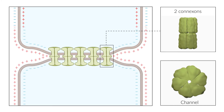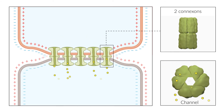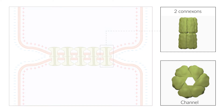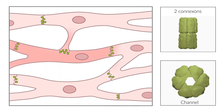If an action potential depolarizes one of the cells, a potential gradient is created between the two cells. This drives the flow of ions through the channel. If the threshold potential is exceeded at the postsynaptic membrane, this can trigger a new action potential. Due to the direct connection via gap junctions, several cells merge to form a functional system.